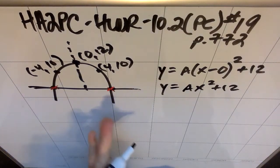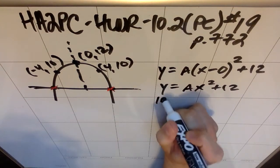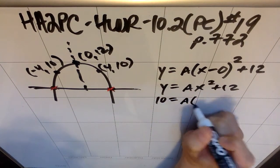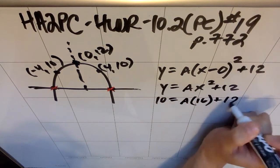I can then use the point (4, 10) or (-4, 10), I don't care which, to find a. So 10 equals a times 16 plus 12.